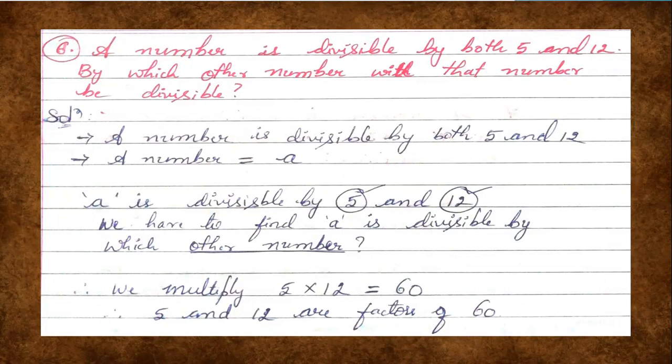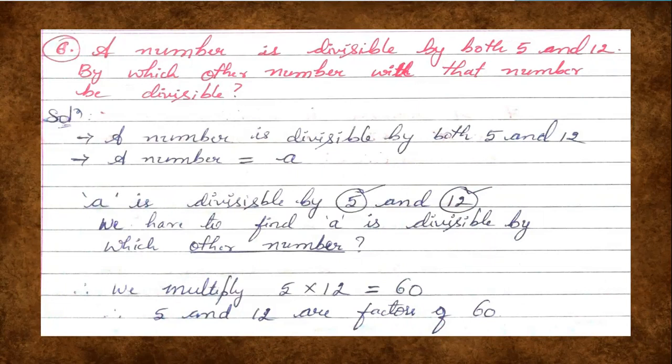Therefore, we multiply 5 and 12. 5 into 12 is 60. Here, 5 and 12 are factors of 60. So when a is divisible by 5 and 12, then 60 is also divisible by a — meaning a is also divisible by 60.